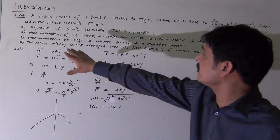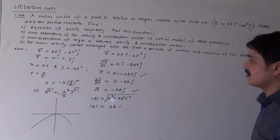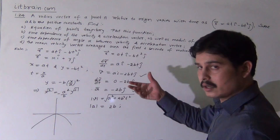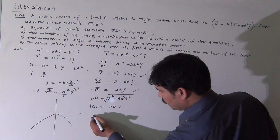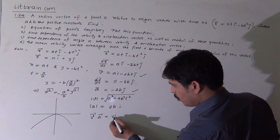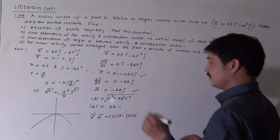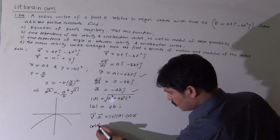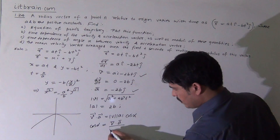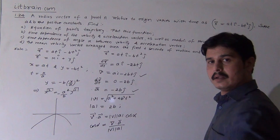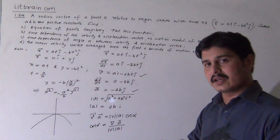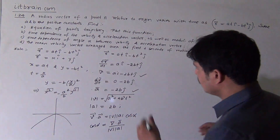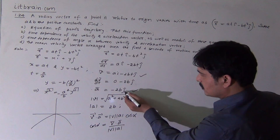For the third part — time dependence of angle alpha between the velocity and acceleration vectors — by the definition of the dot product, v·a = |v|·|a|·cos(alpha), where alpha is the angle between velocity and acceleration. Therefore cos(alpha) = (v·a) / (|v|·|a|). We compute the dot product of v = a·î - 2bt·ĵ with a = -2b·ĵ.